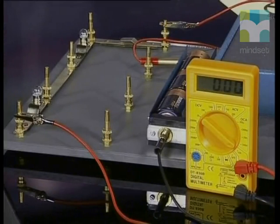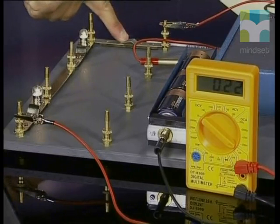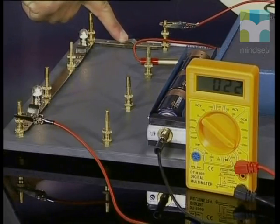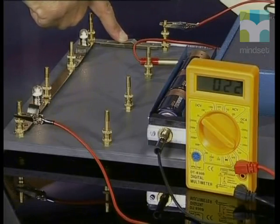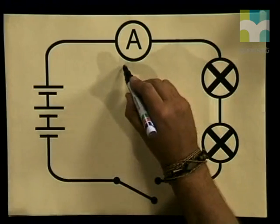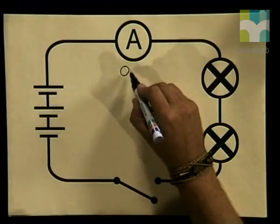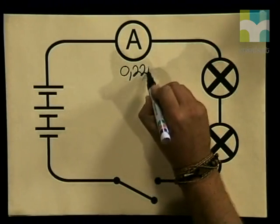I am now going to close the switch. We can see that the current is passing through because the light bulbs are glowing. Now let's take a reading on the ammeter. It is 0.22 amperes. So our ammeter reading is 0.22 amperes.